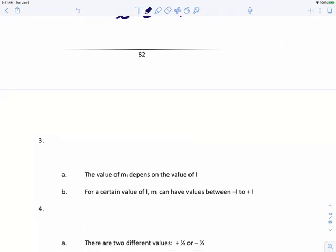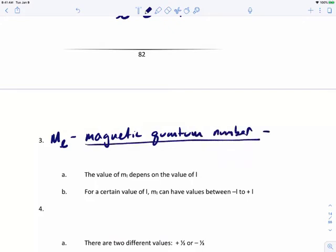So the third quantum number is M sub L, and this is called the magnetic quantum number. The magnetic quantum number describes the orientation of the orbital in space.